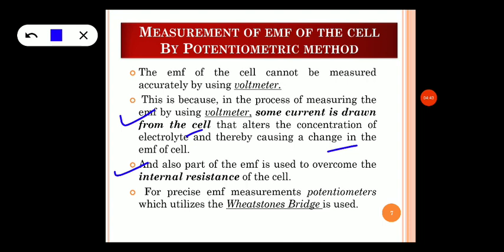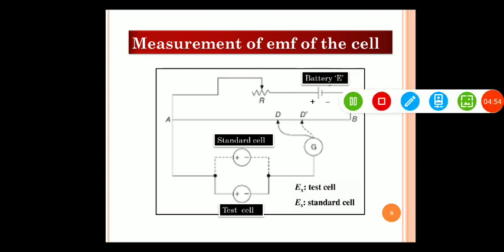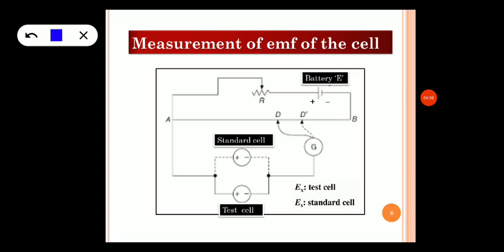For precise EMF measurements, the potentiometer utilizes the Wheatstone bridge method. In the diagram, we have a battery represented by the symbol E, a test cell E subscript X, and a standard cell E subscript S. The test cell is the cell with unknown EMF, whereas the standard cell is a cell with known EMF. Usually, the Weston cadmium cell is used as the standard cell because it produces a reproducible and known EMF.